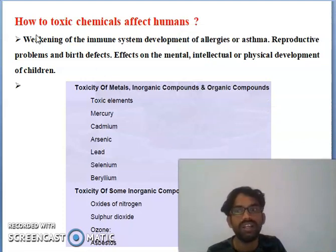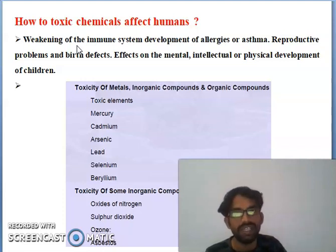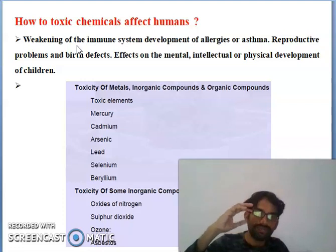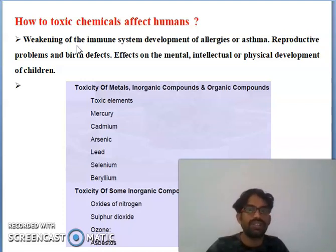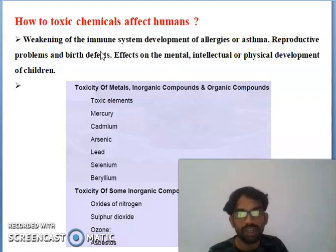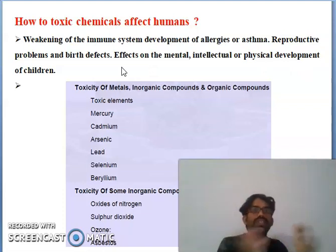How do toxic chemicals affect the human body? Once toxic chemicals enter the body, they weaken the human immune system, reduce its defenses, and may cause allergies, asthma, reproductive problems, breathing problems, birth defects, and effects on the mental, intellectual, and physical development of children. These are the main ways toxic chemicals affect the human body.